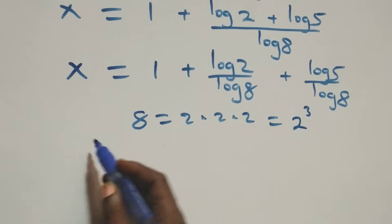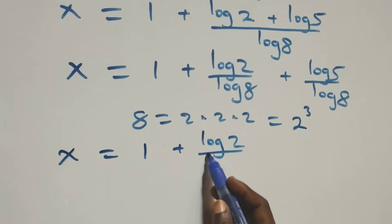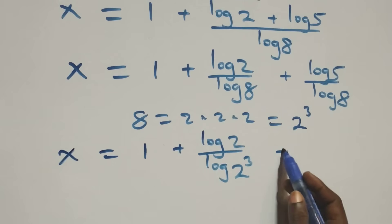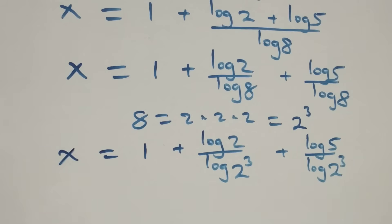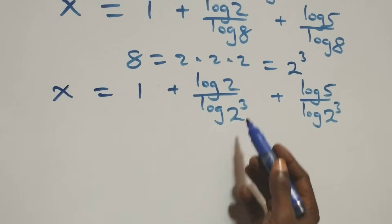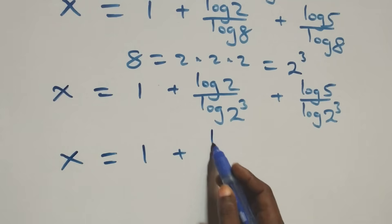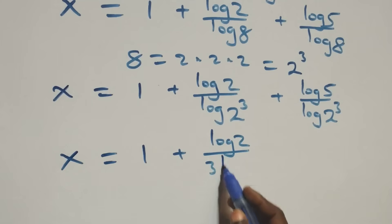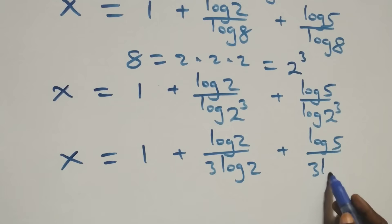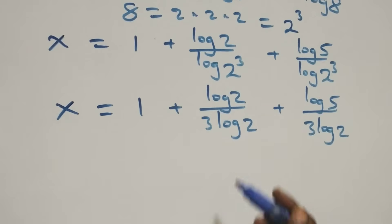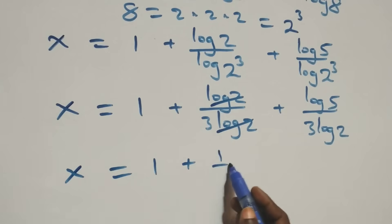So we have x equals 1 plus log 2 over log(2³) plus log 5 over log(2³). Applying the power law of logarithms, log(2³) becomes 3·log 2. This gives x equals 1 plus log 2 over 3·log 2 plus log 5 over 3·log 2. Log 2 cancels in the second term, leaving 1 over 3.